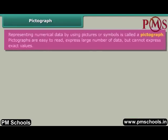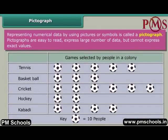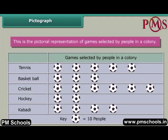Pictograph. Representing numerical data by using pictures or symbols is called a pictograph. Pictographs are easy to read and can express large numbers of data, but cannot express exact values. This is the pictorial representation of games selected by people in a colony.